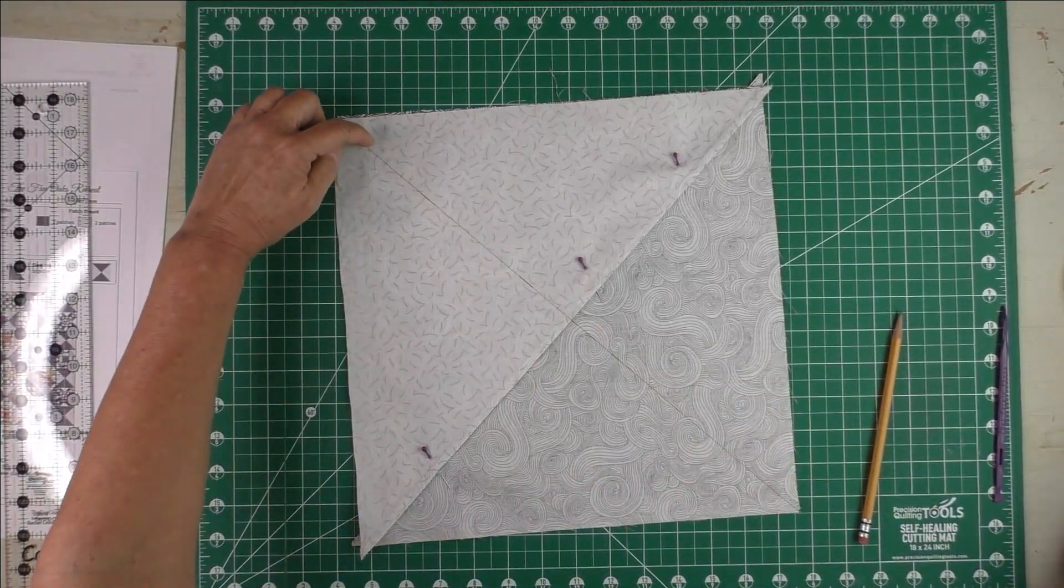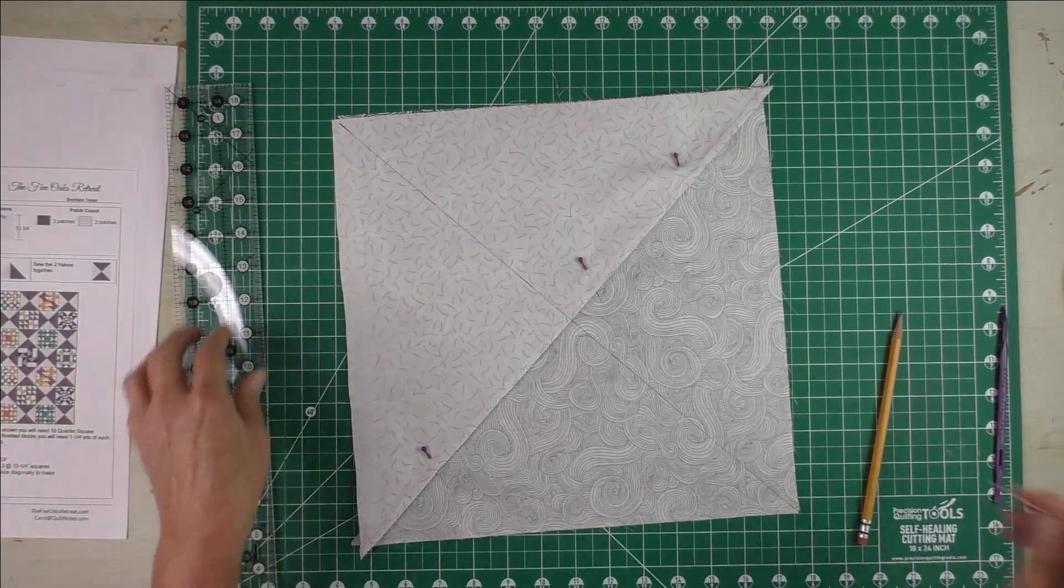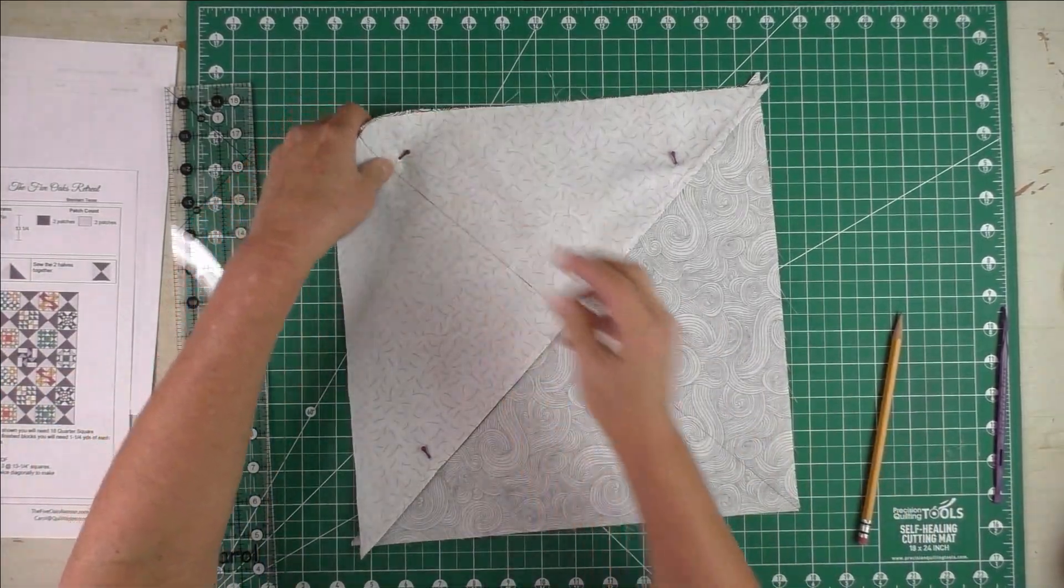We're going to sew on either side of this diagonal line and then cut on the diagonal line again.